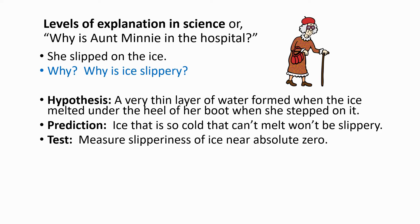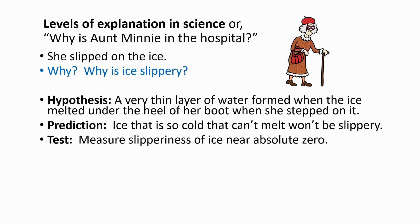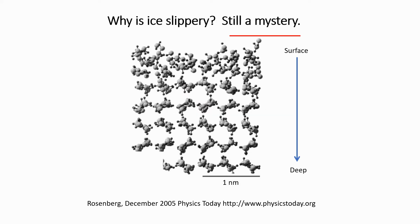The way to test this is to measure the slipperiness of ice near absolute zero, a temperature so cold that water can't form. When this experiment has been done, it is found that ice at temperatures near absolute zero is still slippery. The conclusion then is to reject this hypothesis. So why is ice slippery? It's still a mystery. The answer almost certainly lies at the atomic or subatomic level in the interactions among the water molecules as we go from the surface of the ice deep into the interior.